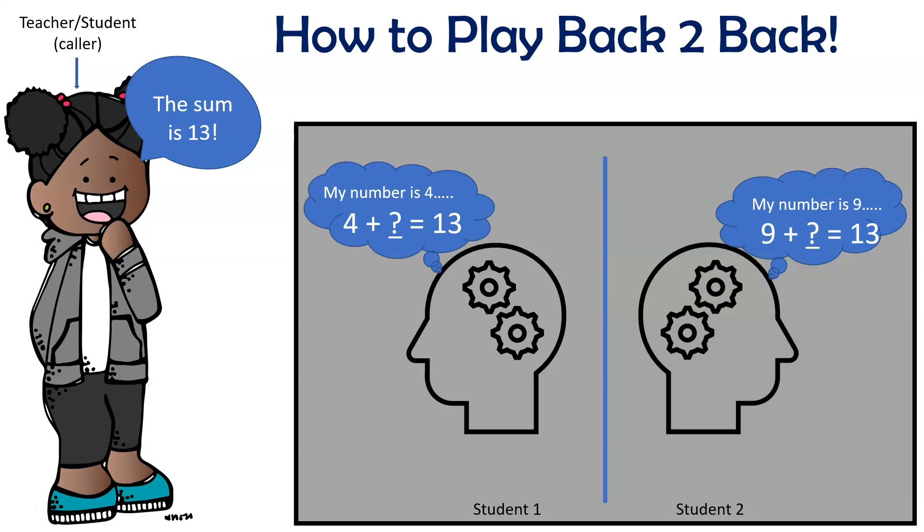Then each student will begin working to figure out the other student's number. There are several ways that they can go about finding the answer. One way is by thinking of it in terms of finding the missing addend. As we see here, student 1 wrote a 4. So he or she can think to himself, 4 plus what number equals 13? Likewise, student 2 wrote a 9 and can think 9 plus what number equals 13. And now is a great time for students to apply the strategies that they've learned, like the add-on strategy or using the inverse operation of subtraction to solve for it.